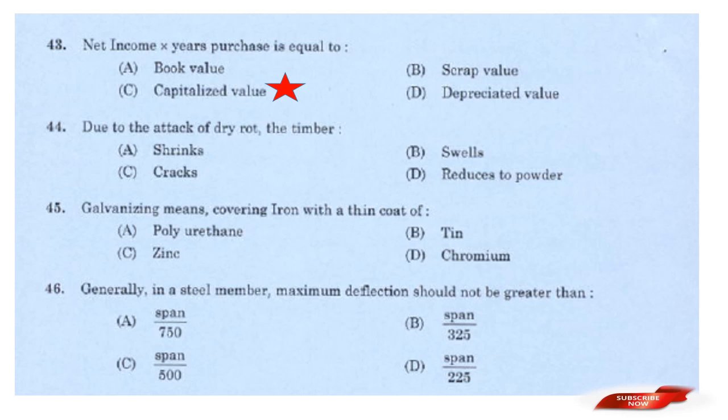Question: Due to the attack of dry rot, the timber? Options: Shrinks; Swells; Cracks; Reduces to powder. Answer: Option D — Reducing to powder. Due to the attack of dry rot, the timber reduces to powder.